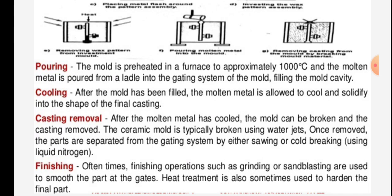The mould is preheated in the furnace to approximately 1000 degrees Celsius, and molten metal is poured from the ladle via gravity into the gating system of the mould. After filling the mould cavity, the molten metal is allowed to cool and solidify into the shape of the final casting.